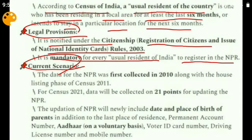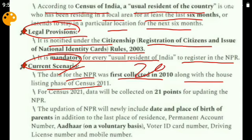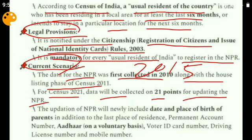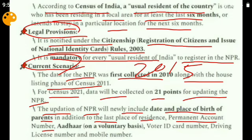On the current scenario: NPR data was first collected in 2010 alongside the house-listing phase of Census 2011, then again in 2015. The third time will be 2021, when data will be collected on 21 points. The updation will newly include date and place of birth of parents, last place of residence, PAN, Aadhaar, voter ID card number, driving license number, and mobile number.